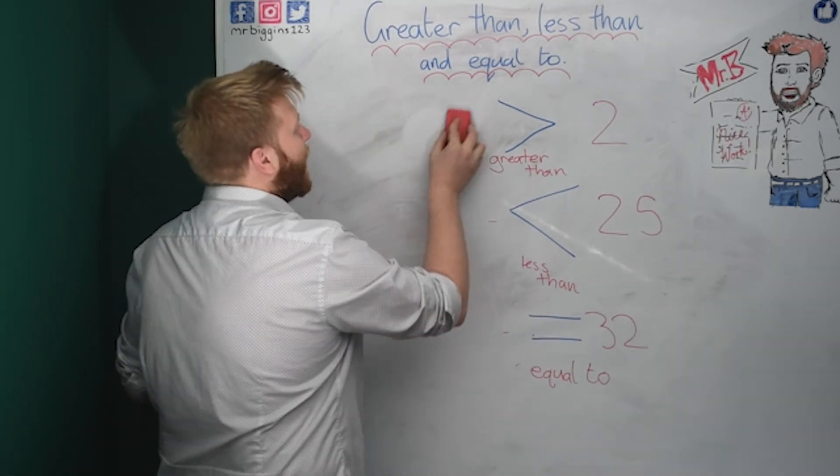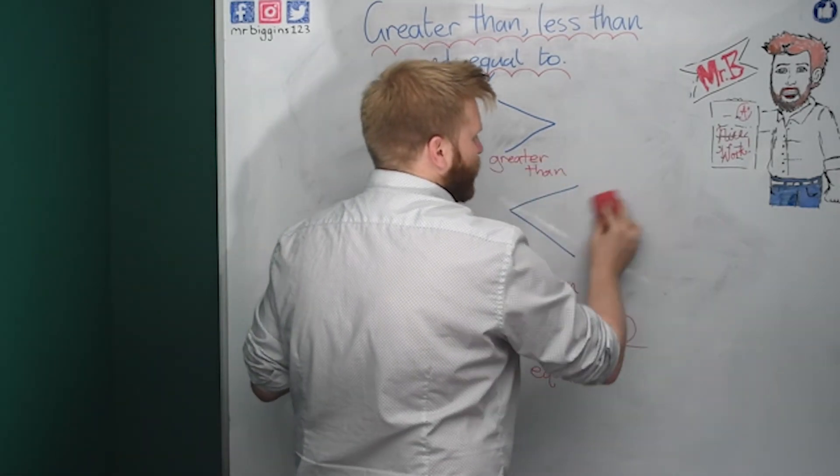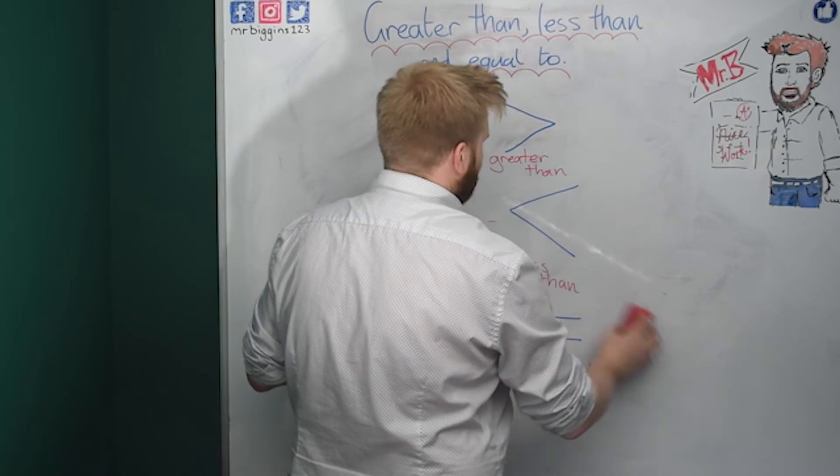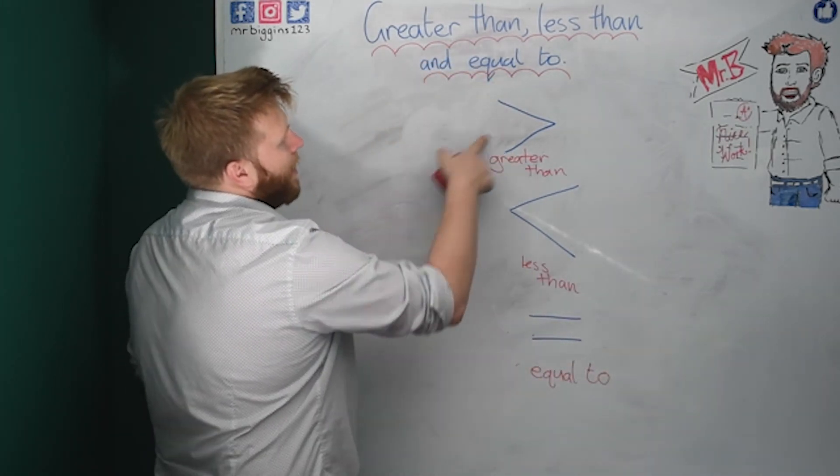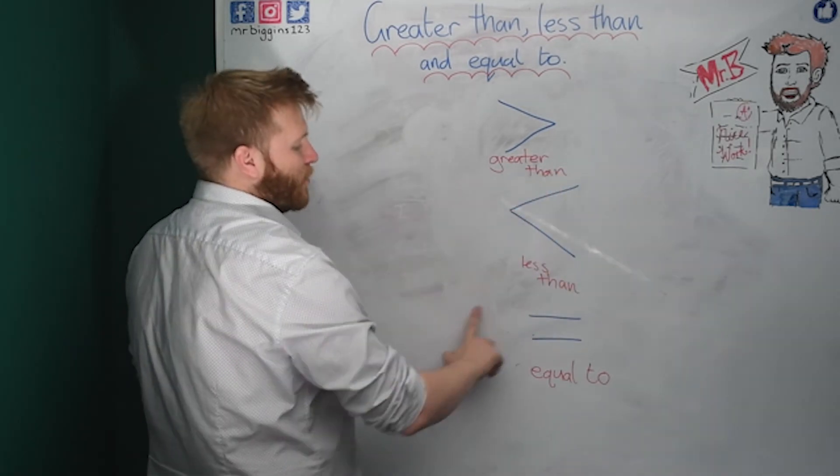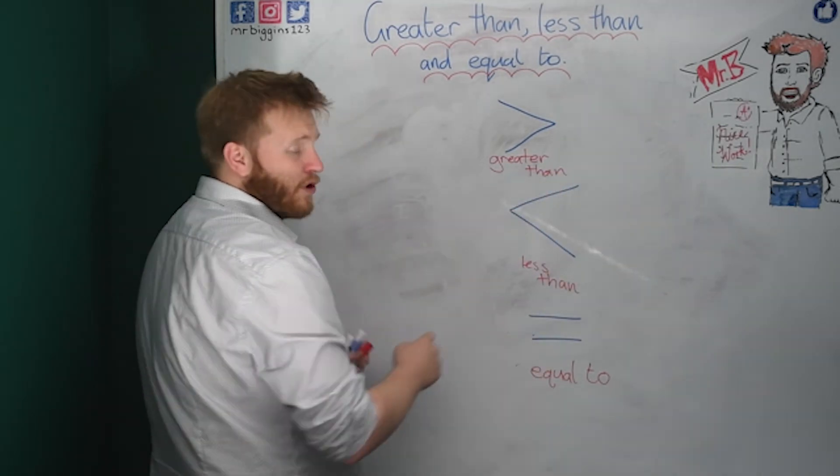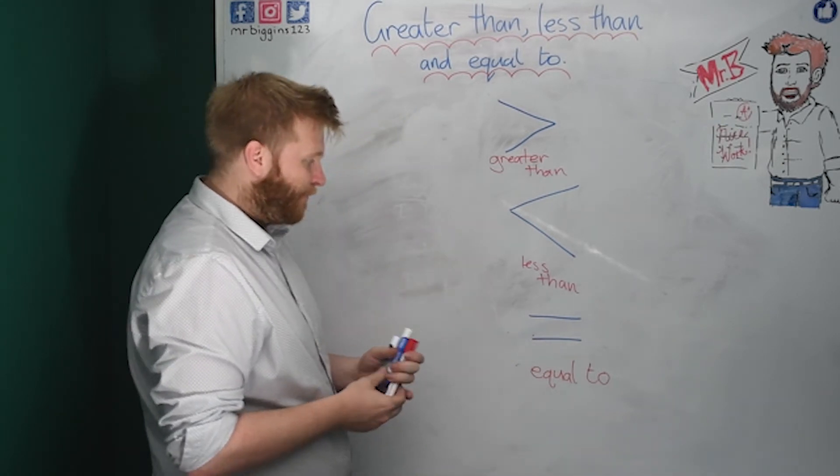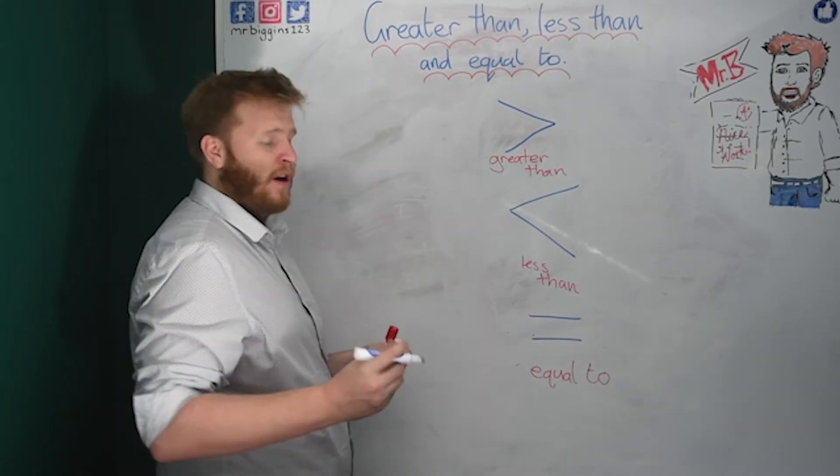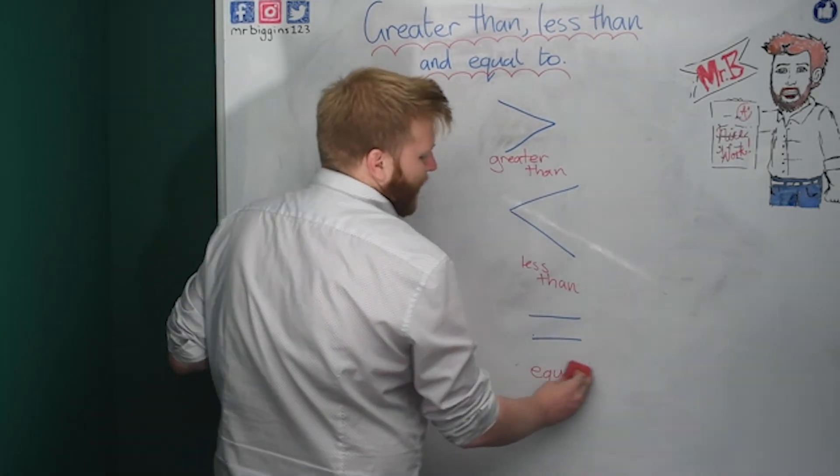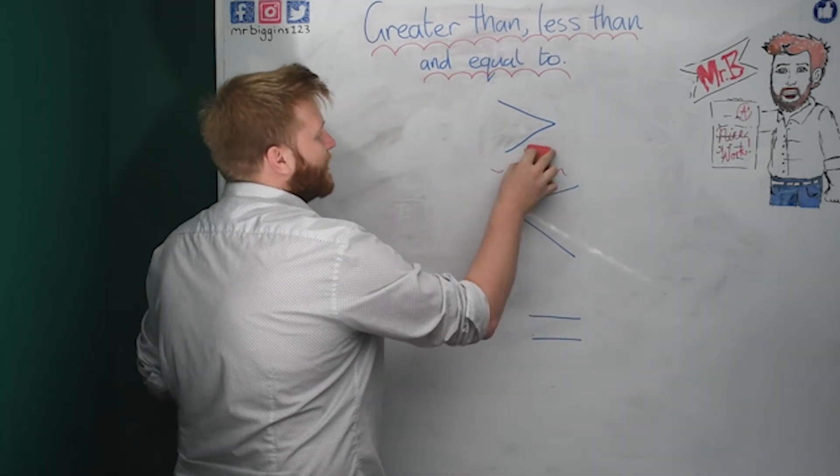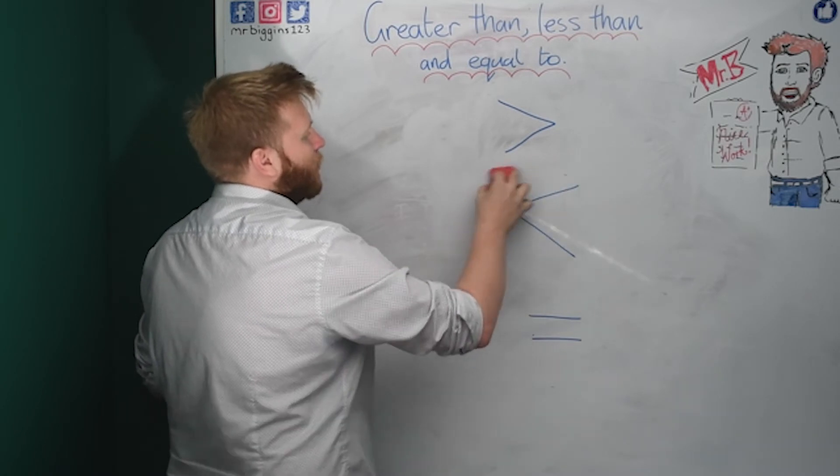Now we know greater than, less than, and equal to, we've got some signs here. We've got this arrow pointing that way, an arrow pointing this way, and our equal sign. Now, we're going to start with the equals. We're going to start at the bottom first because you're going to have seen equals quite a lot. We don't need our vocabulary anymore because we're going to find out that these signs mean the same.